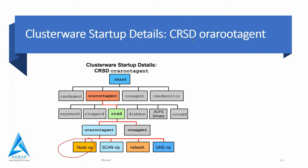Scan VIP - Single Client Access Name - was introduced in 11.2. When you use scan, it eliminates the dependency on static cluster node names. This method allows nodes to be added or removed from the cluster without affecting client connectivity, meaning the tnsnames.ora file does not need to be updated whenever a node is added or deleted. If GNS is used in the cluster, three scan VIPs are started on member nodes using IP addresses assigned statically or obtained from a DHCP server.